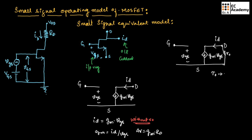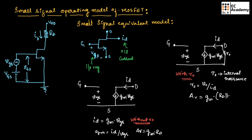We can also write the small signal model with internal resistance R0, where R0 = V0/ID. For the circuit with internal resistance R0, the voltage gain is written as GM · (RD ∥ R0). Without internal resistance, the gain is GM · RD; with internal resistance, it is GM · (RD ∥ R0). This completes the small signal operating model of MOSFET. Hope you have understood the topic. Thank you.